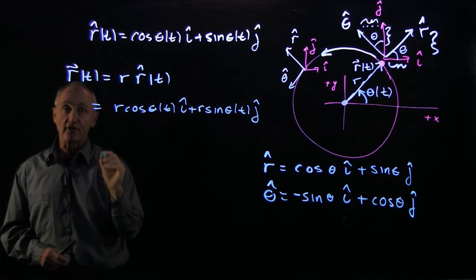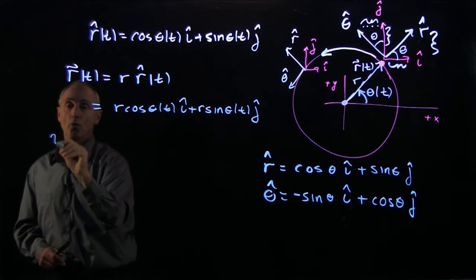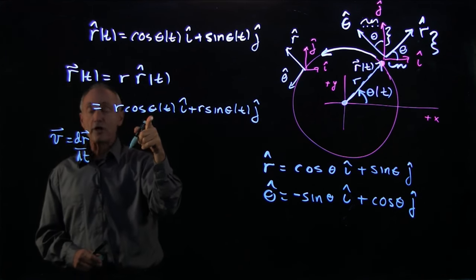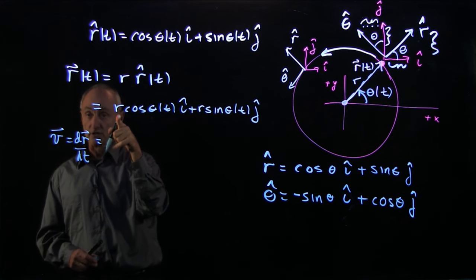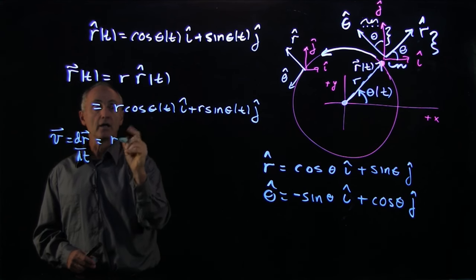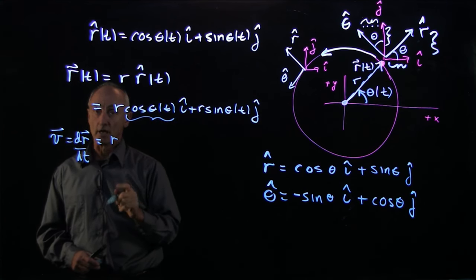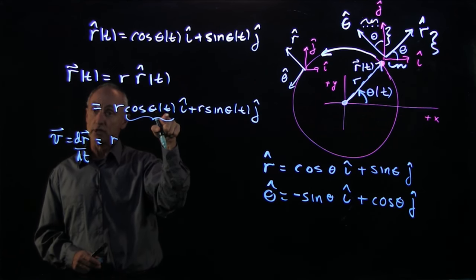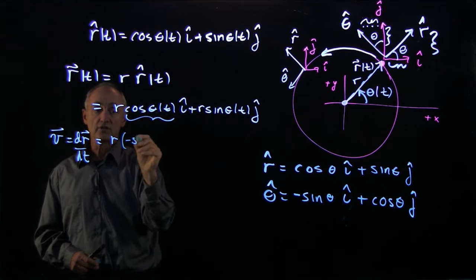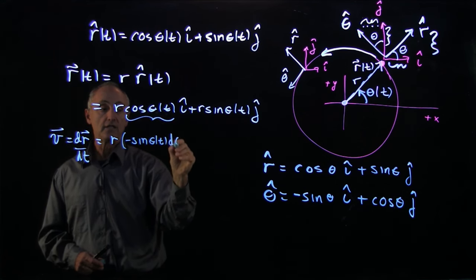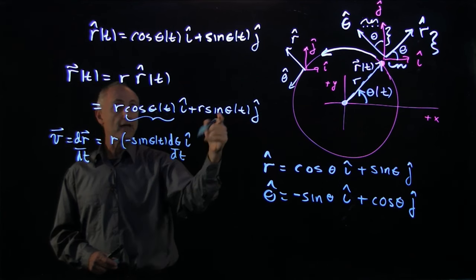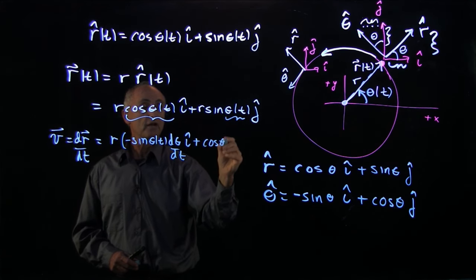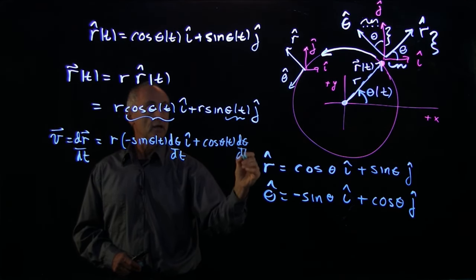Now, we can define the velocity of this object, where the velocity is the derivative of the position vector. When you differentiate, remember, r is a constant. So we get r. Now, what is the derivative with respect to time of cosine theta t? Because the argument of theta is a function of t, we need to use a chain rule. So the derivative is minus sine theta of t d theta dt i hat. And the derivative of the sine is cosine theta of t d theta dt j hat.